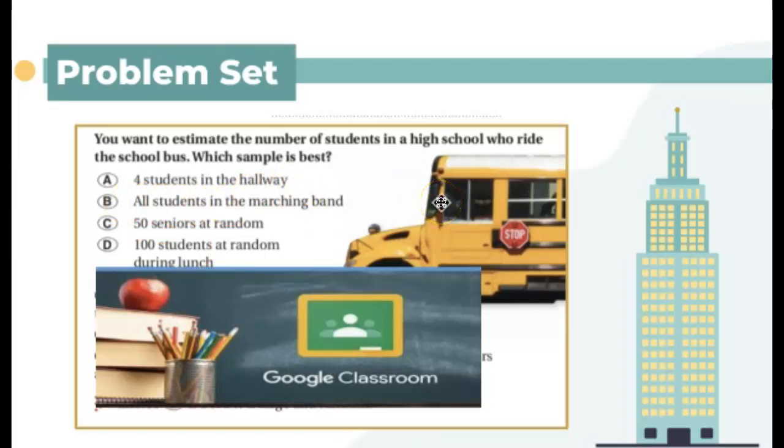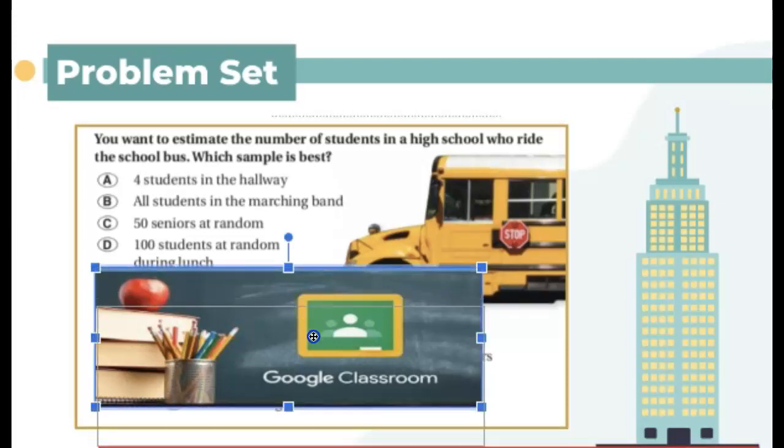So all students in the marching band, 50 seniors at random, 100 students at random during lunch. So you are going to pick which A, B, C, or D is the best example for that. So pick a letter. So A, B, C, D, or E. So anyway, if you pick A, let's see what it is.